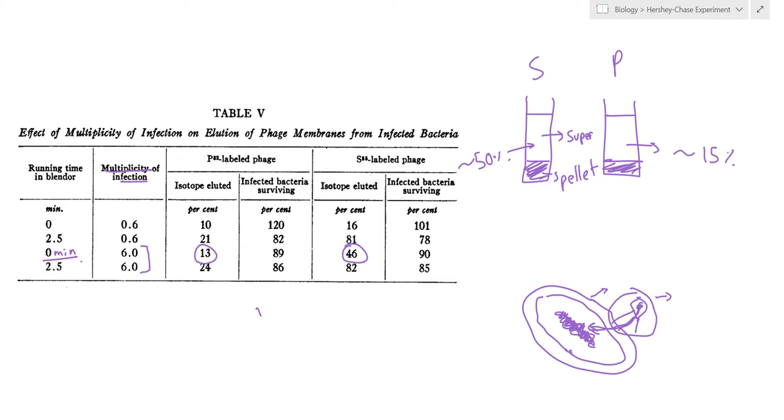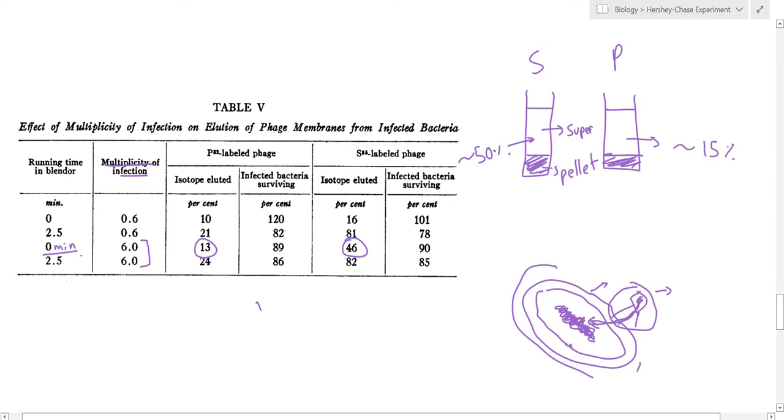So we'd expect that the more dense cells would settle in the pellet and hence we would find more phosphorus in the pellet if DNA is the genetic material whereas sulfur would be released in the protein coats and would be found in the supernatant, more of it could be found in the supernatant as it can easily detach via the protein coats.